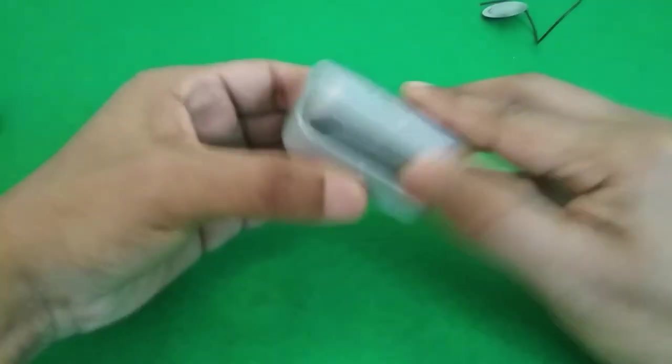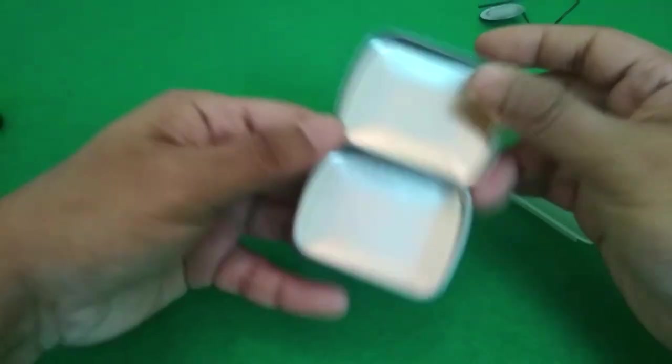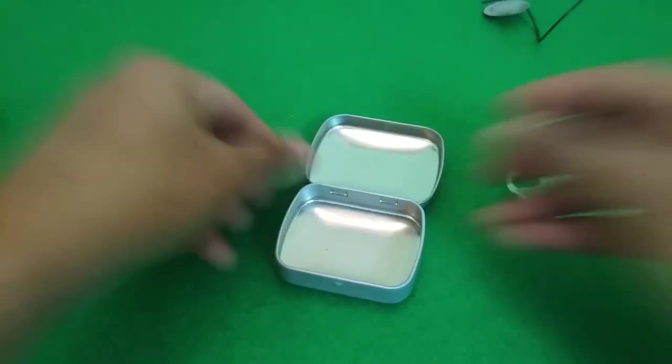Here's what I'm using for an enclosure. It's a mint container and it's metal. That's good because I can use it as circuit ground and that's going to shield from electromagnetic noise.